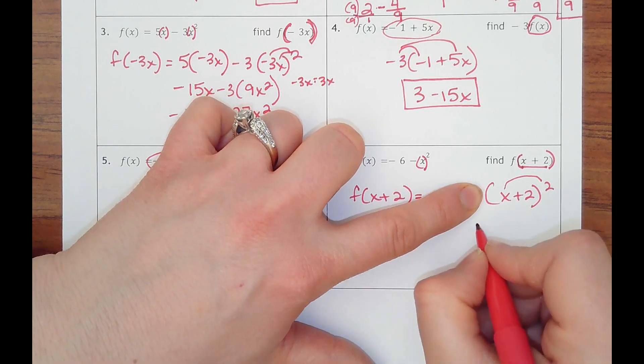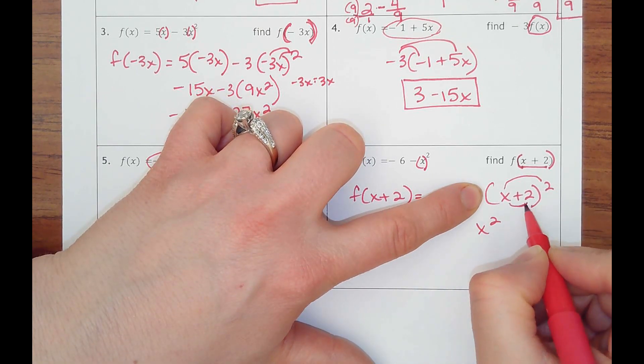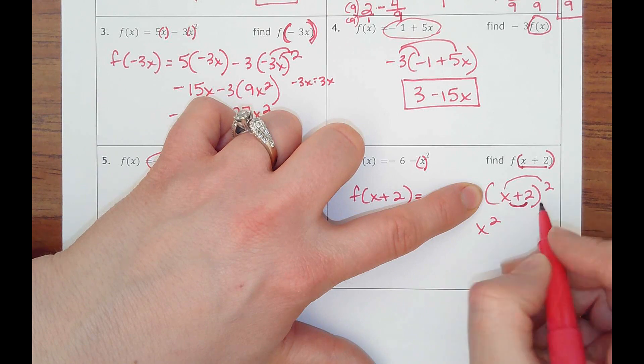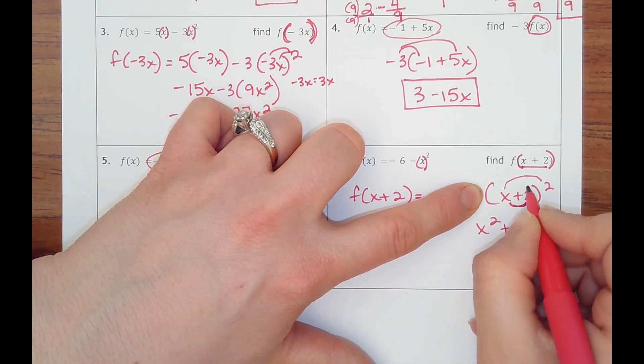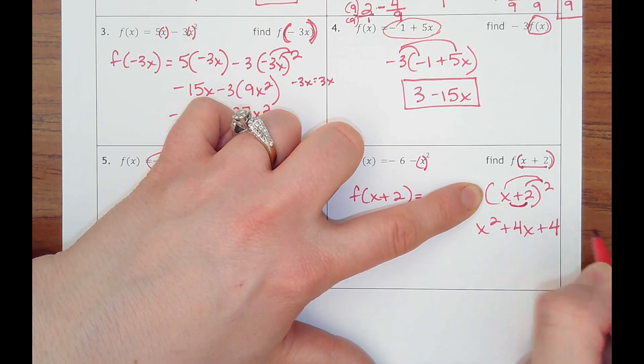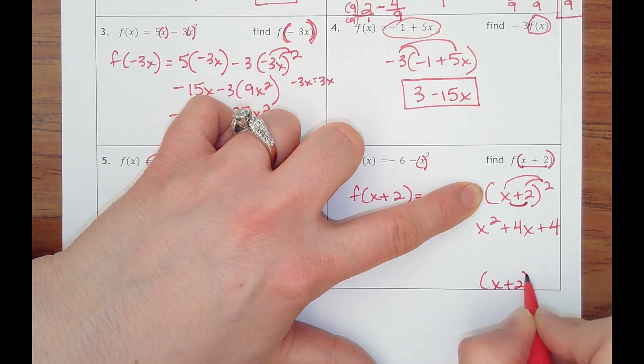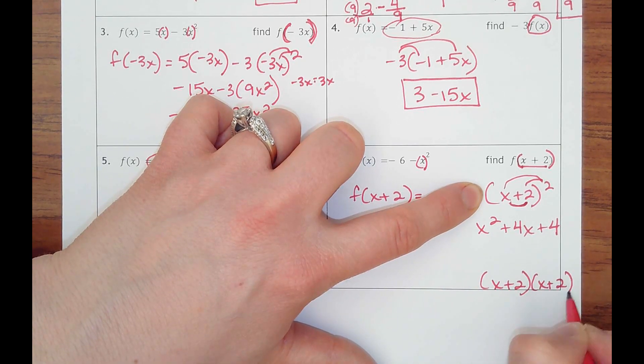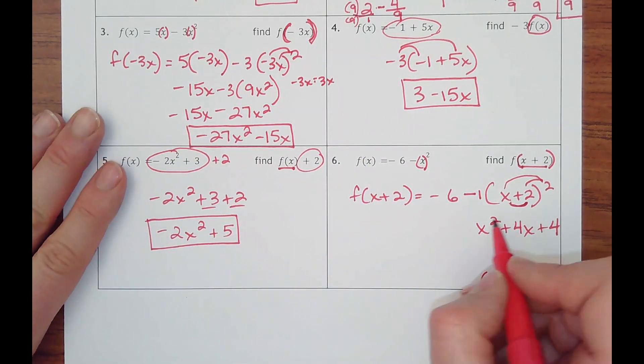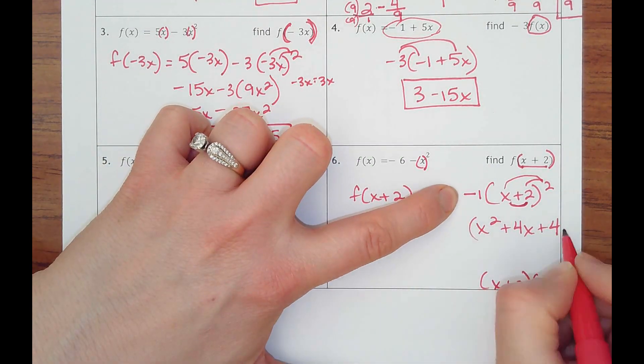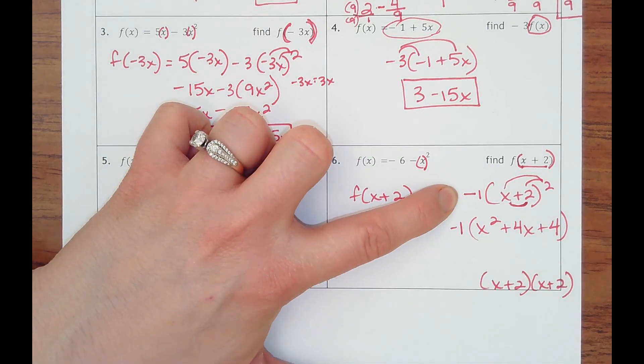So the trick to do this in your head is really squaring the first part. So x squared is x squared. Then you're multiplying two times x gets two x. Well, then you double it to get four x. Two squared is four. That's the way I do it without writing it out like this. But of course you always can, if you still need to, it'll get the same thing. But then all of that needs to get this negative one distributed to it.